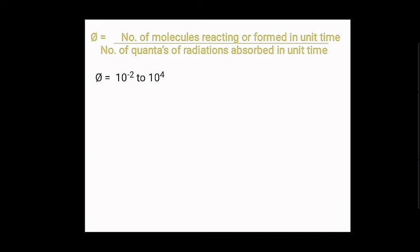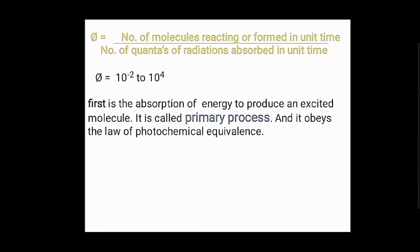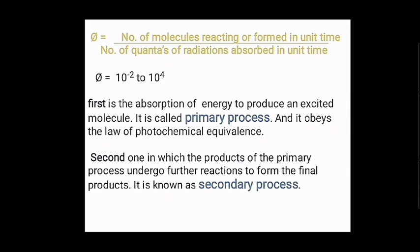However, in practice the value of phi is rarely 1, and ranges from 10⁻² to 10⁴. This is because photochemical reactions involve two processes: a primary process and a secondary process. The primary process is the absorption of energy to produce an excited molecule, and it obeys the law of photochemical equivalence. The secondary process involves the products of the primary process undergoing further reactions to form secondary products. Because of these two processes, the total value of phi has a wide range rather than remaining constant at 1.